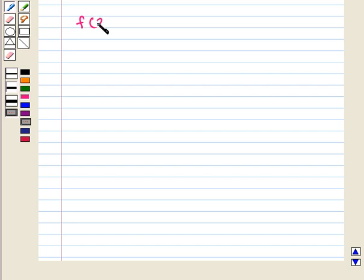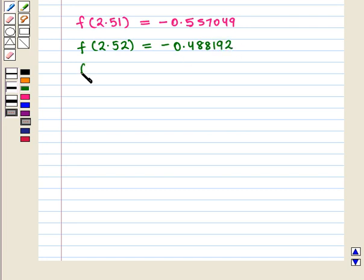So now we have f(2.51) and its value is -0.557049. Similarly, f(2.52) is equal to -0.488192. f(2.53) is equal to -0.418423.